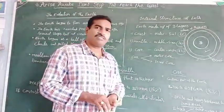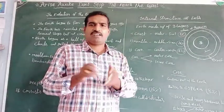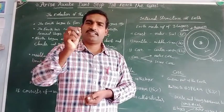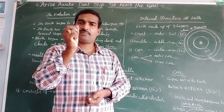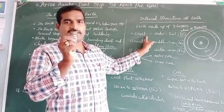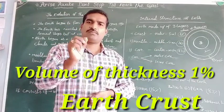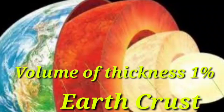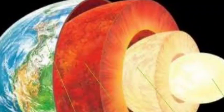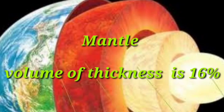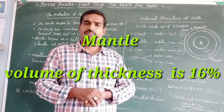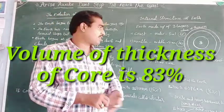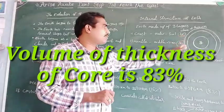Now, if you observe the diagram, you can see the volume of thickness of each layer. The crust is only 1% — just like the thin skin of an apple. Next, the mantle has a volume of thickness of 16%. And the core has the most — 83%. Look at the board: crust 1%, mantle 16%, core 83%. These are the volumes of thickness.